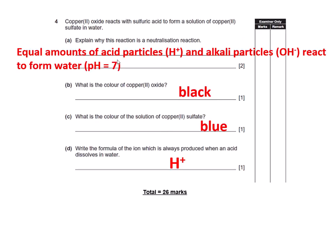Why the reaction is neutralization? Equal amounts of acid particles and alkali particles react to make water which has got a pH of 7. It's the acid particles reacting with an equal amount of alkali particles, H+ and OH-, and it makes water which is neutral, pH 7.